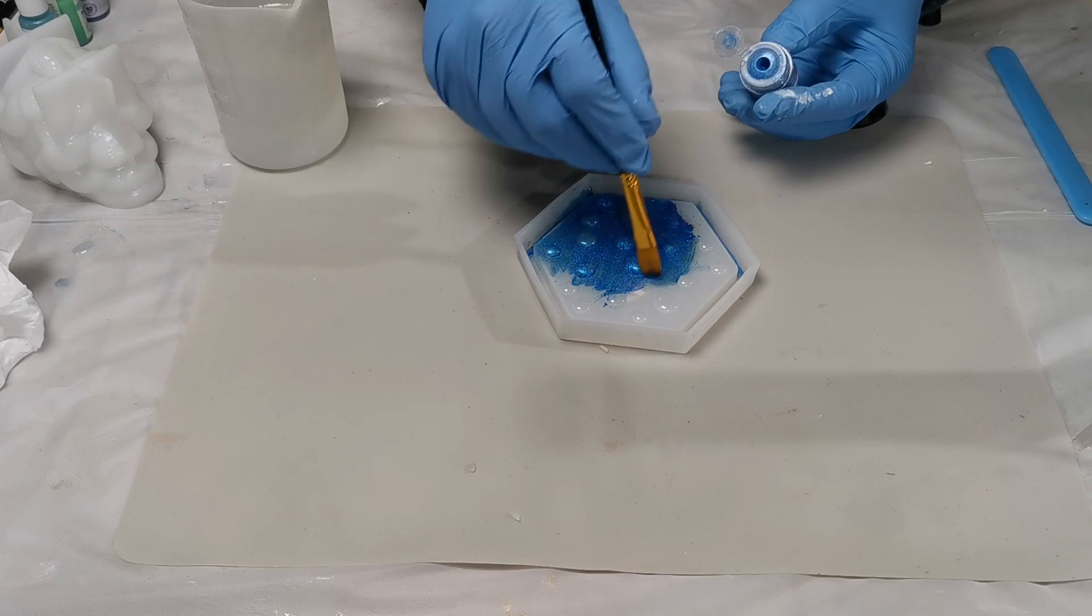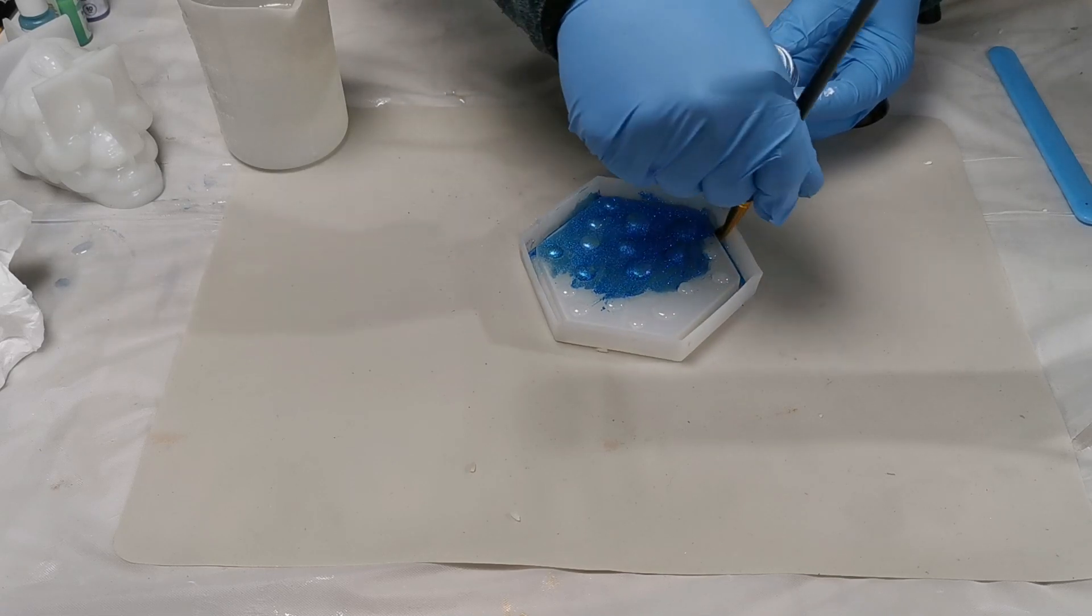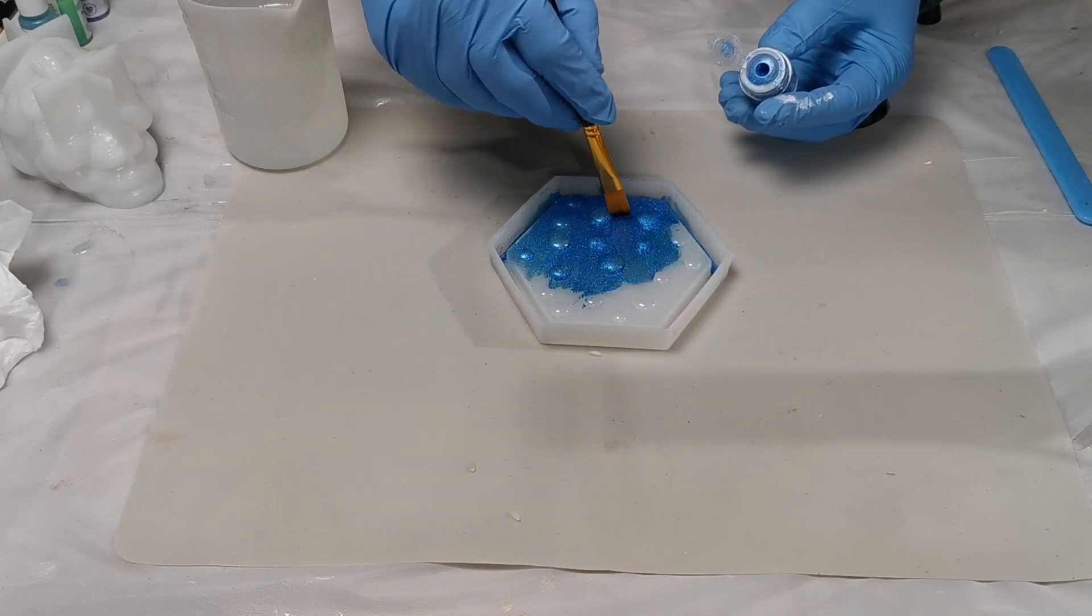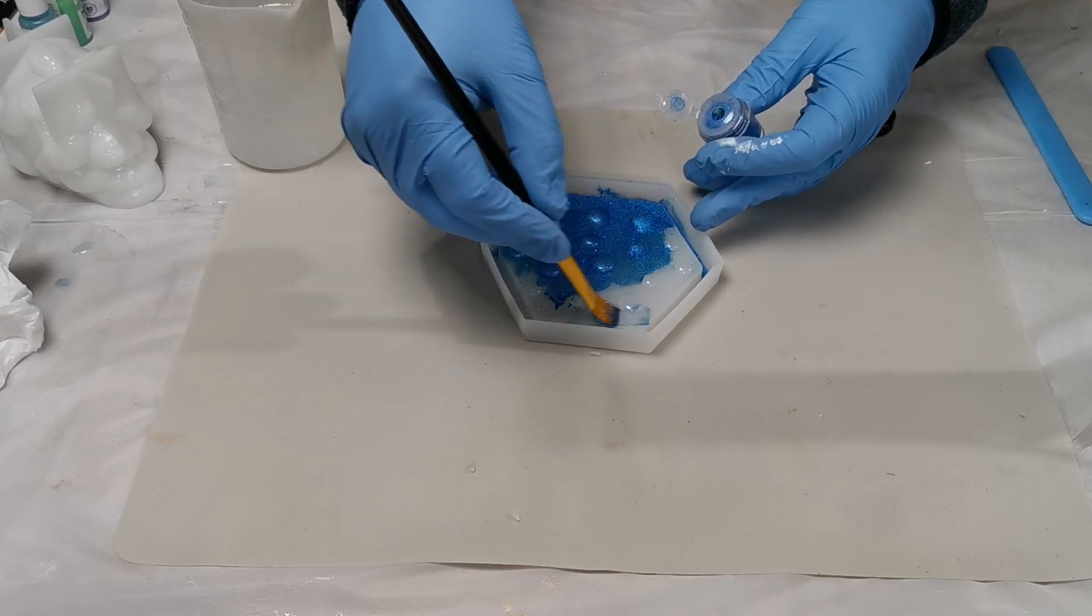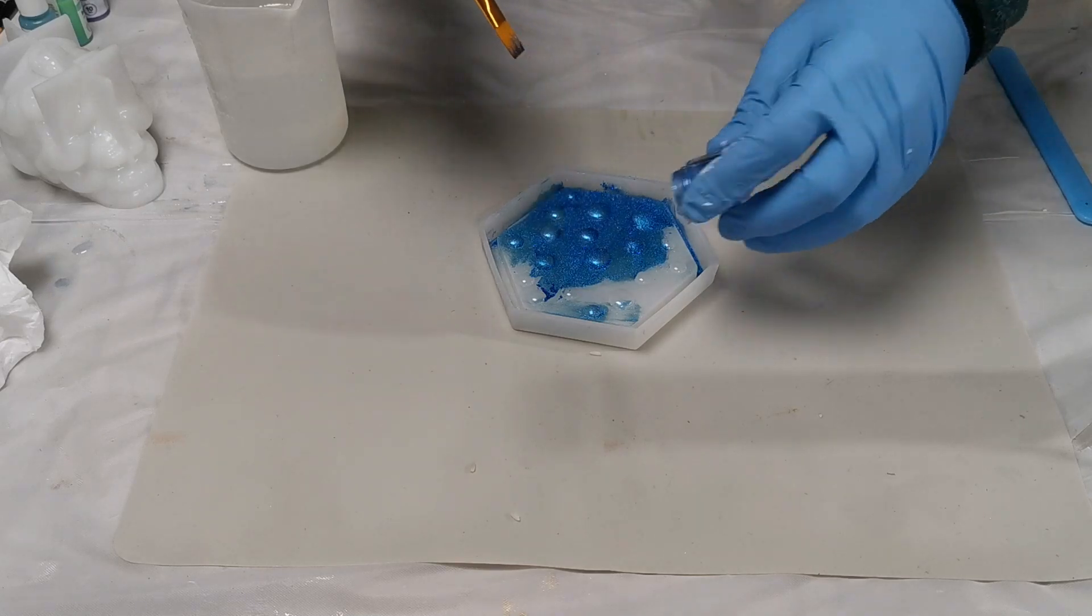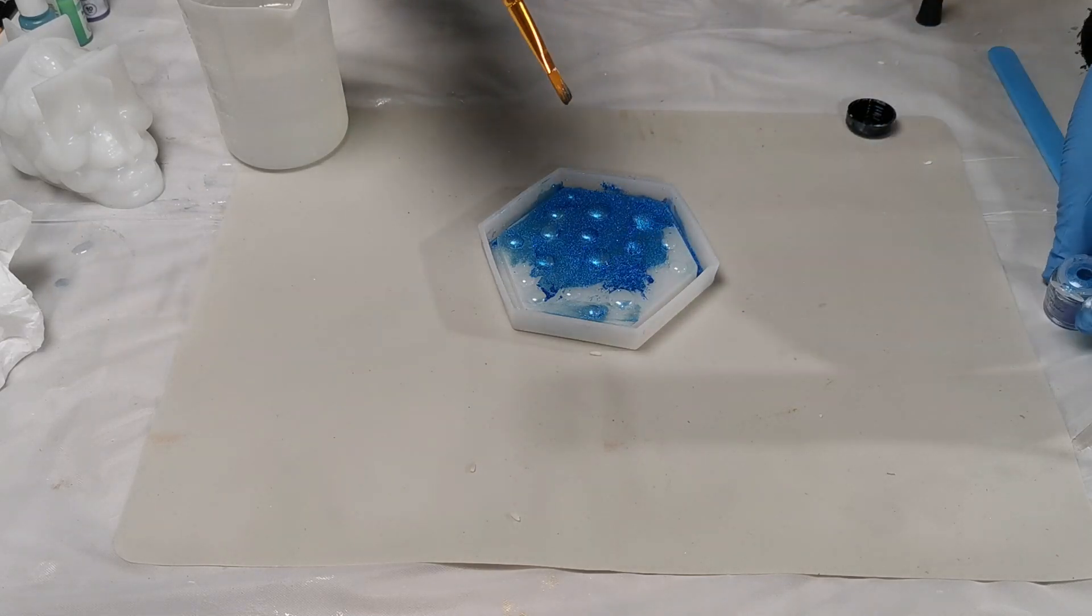What you can see me doing on screen here is spreading that mica powder around the silicon mold. It's really important to get into every nook and cranny and to coat the silicon mold, so that when we pour the resin in, that resin bonds with the mica powder on the surface.